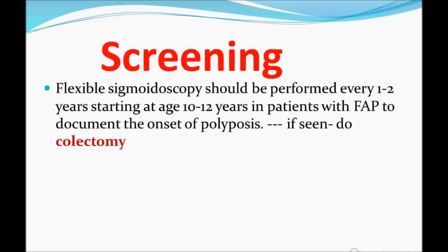Screening is very important for USMLE. Flexible sigmoidoscopy should be performed every one to two years starting at age 10 to 12 years in a patient with FAP, to document the onset of polyposis. If polyps are seen, collect them directly.